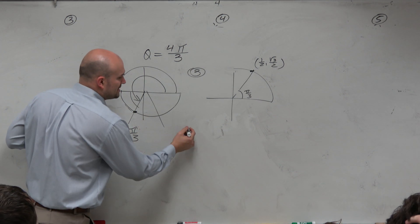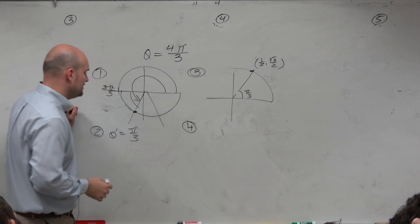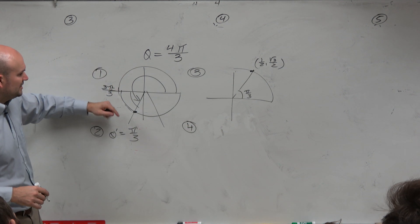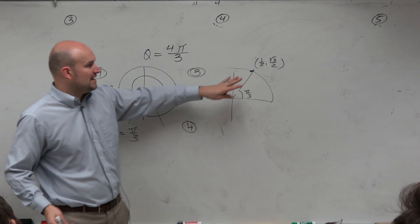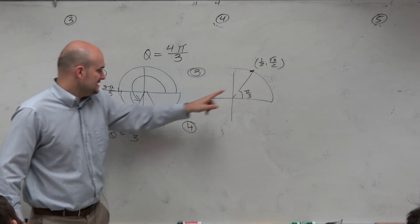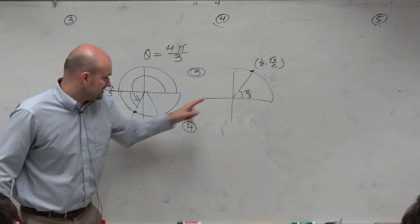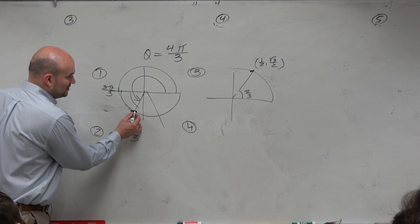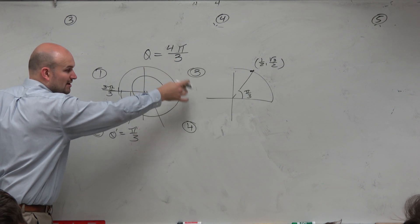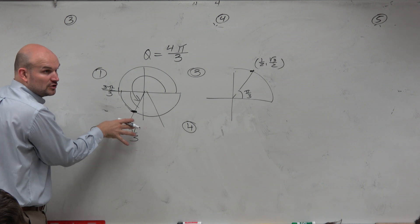And then step number 4 and step number 5, I kind of lumped together. Step number 4 is really identifying, OK, so now we know that's the reference angle. These two angles are the same. So this point on the unit circle is the same as that point. However, the signs are different because this is in the third quadrant. And in the third quadrant, my x and y's are both negative.